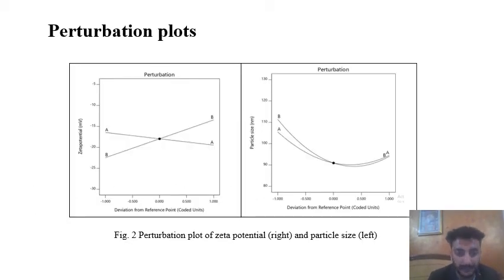These are the perturbation plots. For the zeta potential, you can see there are two factors, A and B. Both are showing no effect on the zeta potential of quercetin. Both A and B have equal effect on the zeta potential.